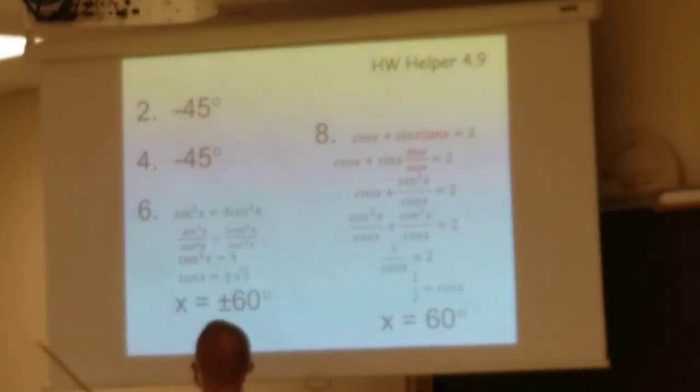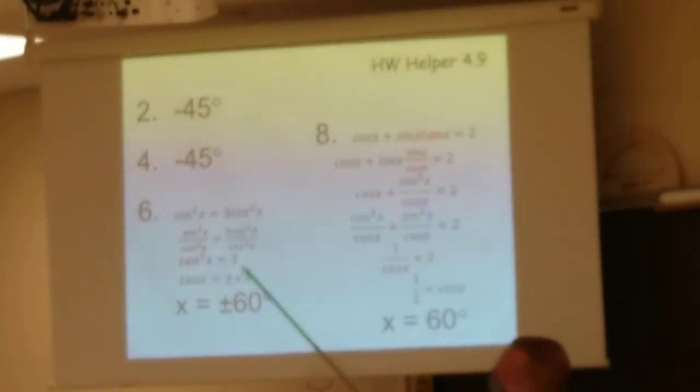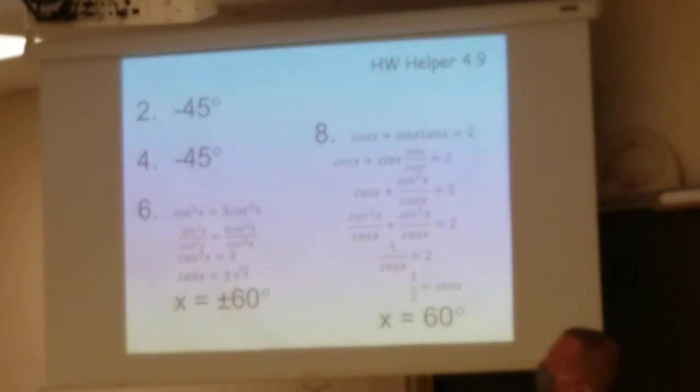I anticipated that some students would have a question on number 6. If you took my hint correctly, you divided both sides by cosine squared. Now, after you do that, you just get the number 3, which is nice, but you also get sine squared over cosine squared, which is also nice, because that equals tangent squared.